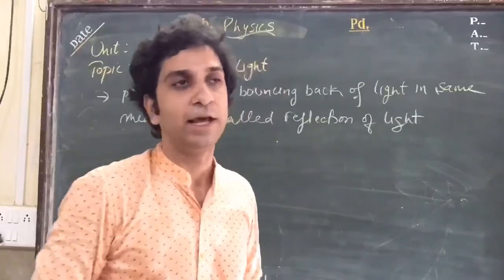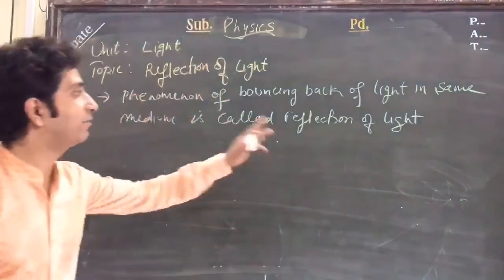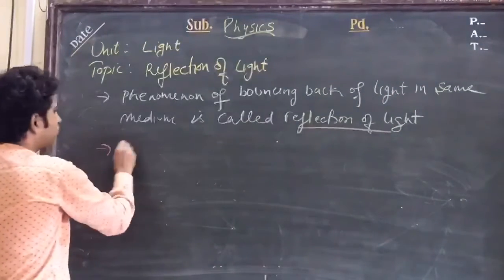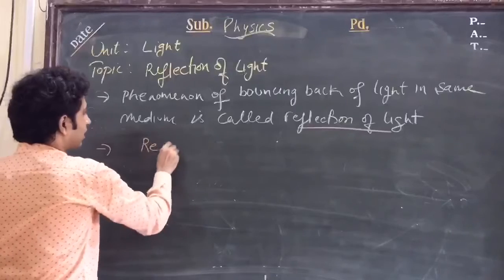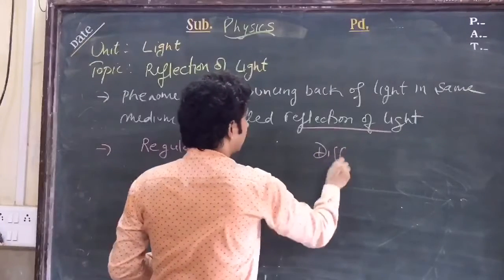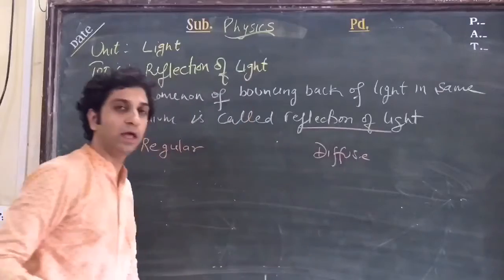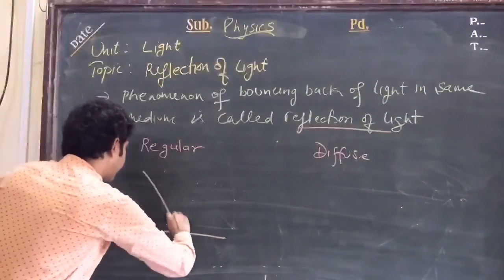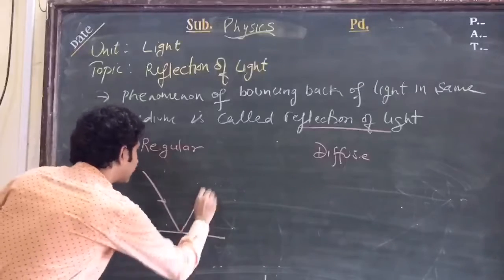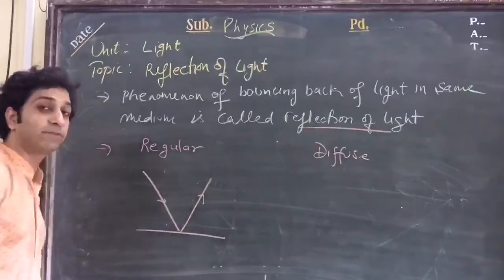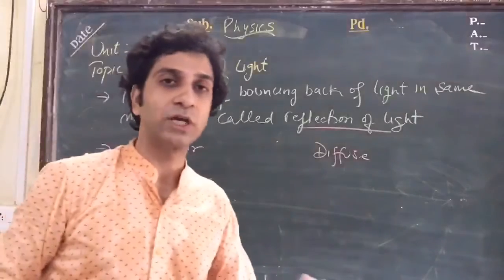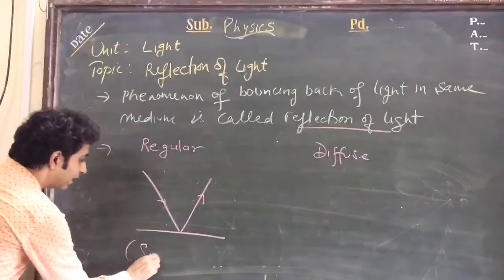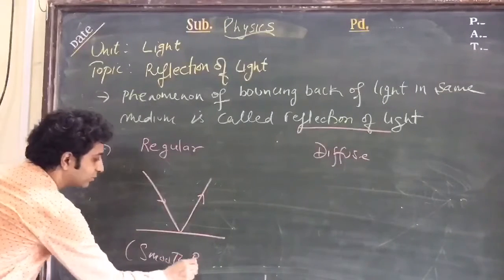Reflection basically comprises two types: regular reflection and diffuse reflection. Regular reflection is when reflection occurs from a smooth surface. All reflection phenomena happening from smooth surfaces are examples of regular reflection.